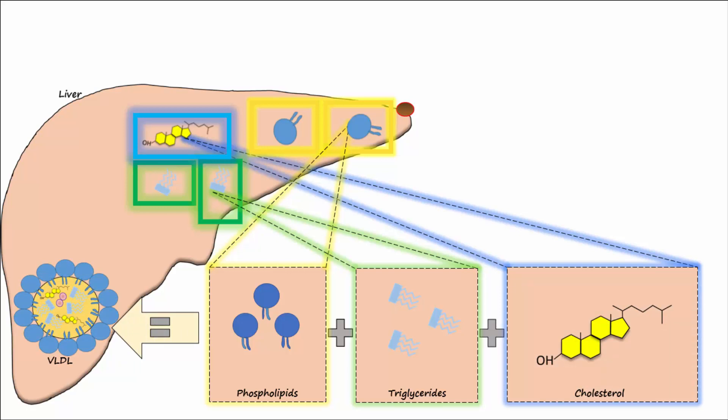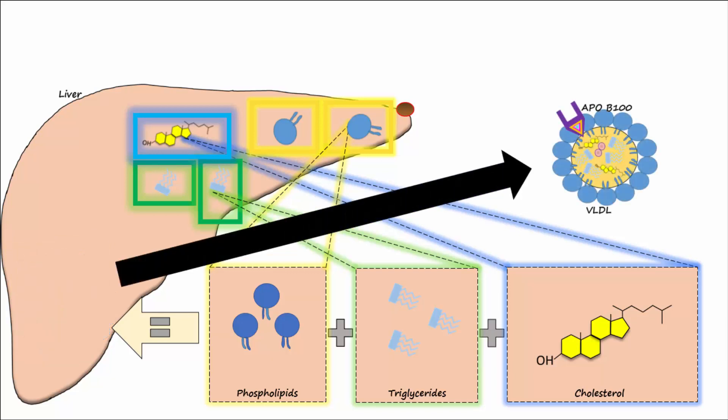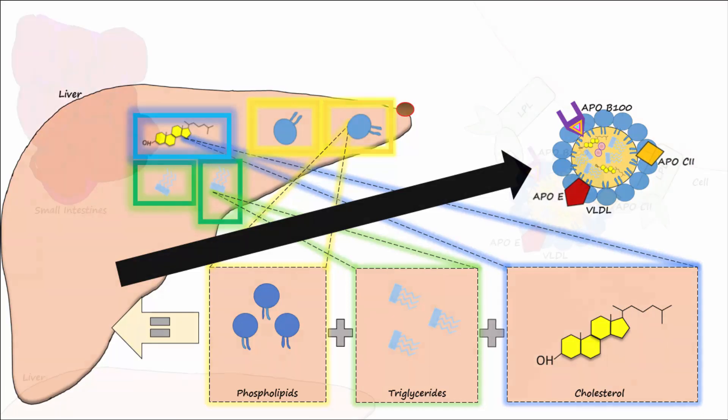The liver then attaches the protein ApoB100 to it. VLDL then leaves the liver and goes into the blood where ApoE and ApoC2 release from the liver attached to it. The VLDL uses ApoC2 to bind to a body cell that has LPL.